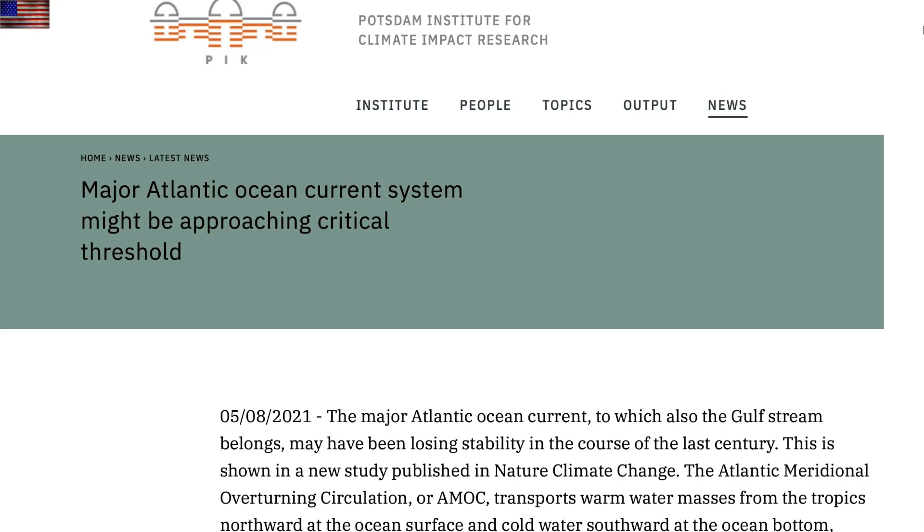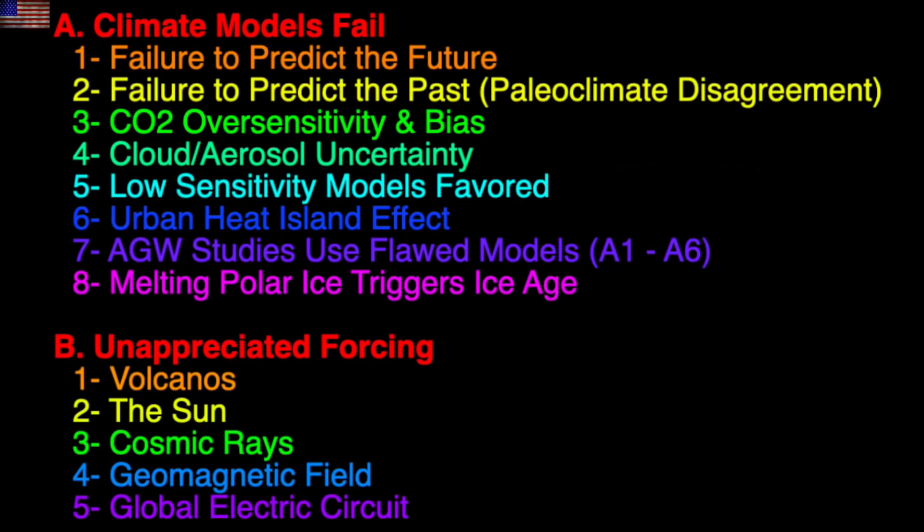showing that indeed, the Atlantic meridional overturning circulation is breaking down into its weak state. This is not a fluctuation or minor variability, like a pothole. This is, the bridge is out, road closed. And this is what is found as A8 on our climate science fail chart. This thing's coming in handy, isn't it?